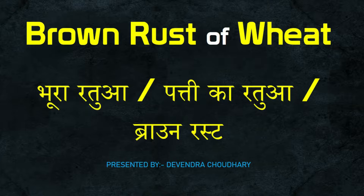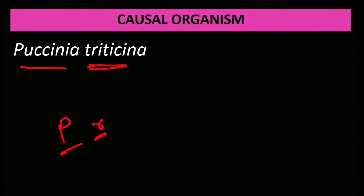Brown rust of wheat is caused by Puccinia triticina, also known as Puccinia recondita. Both names refer to the same pathogen.